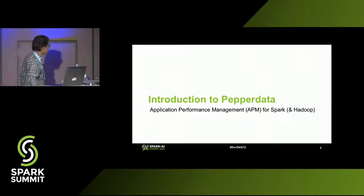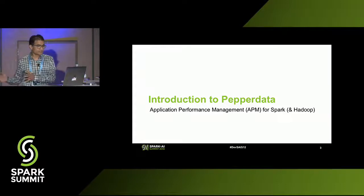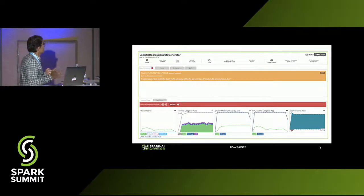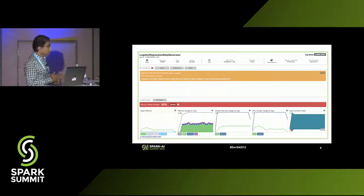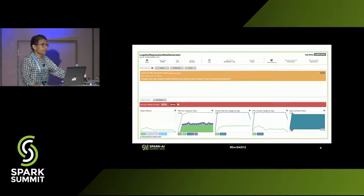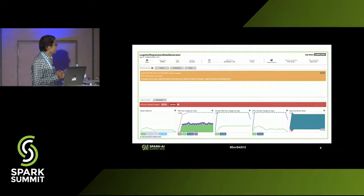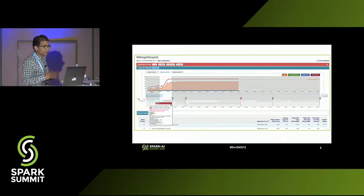A quick introduction to Pepperdata: we do performance management for big data, whether you're the operator or the developer. We have solutions that help make your life easier. I'm going to talk mostly about our APM for Spark — we also do Hadoop. This is our application summary view for a Spark application. We tell you your application can run better and give you specific recommendations. We also detect bottlenecks — if your application is running on a Yarn cluster and you're waiting a long time to get scheduled, we can detect that and tell you in advance.